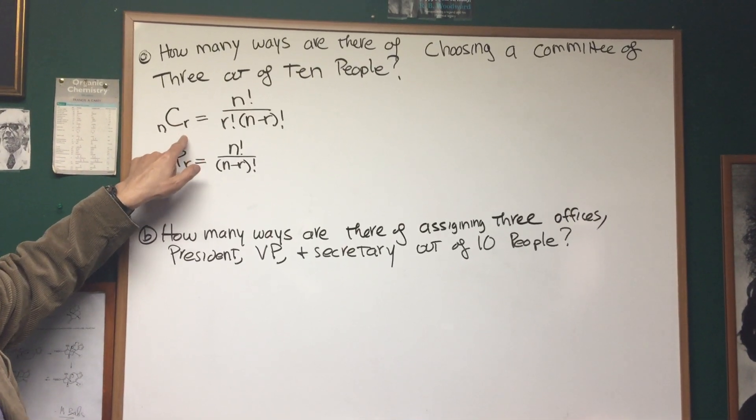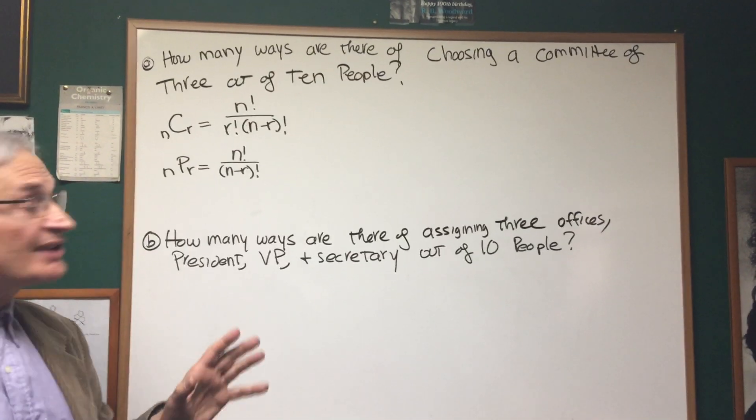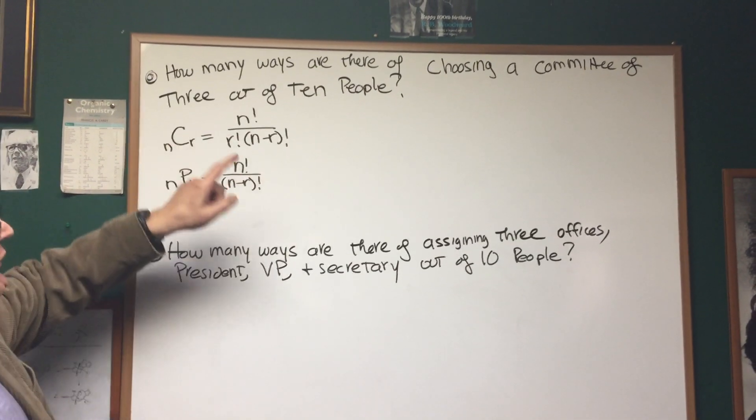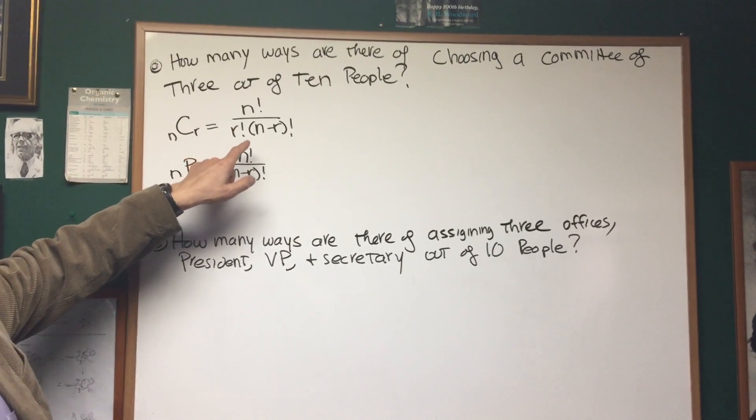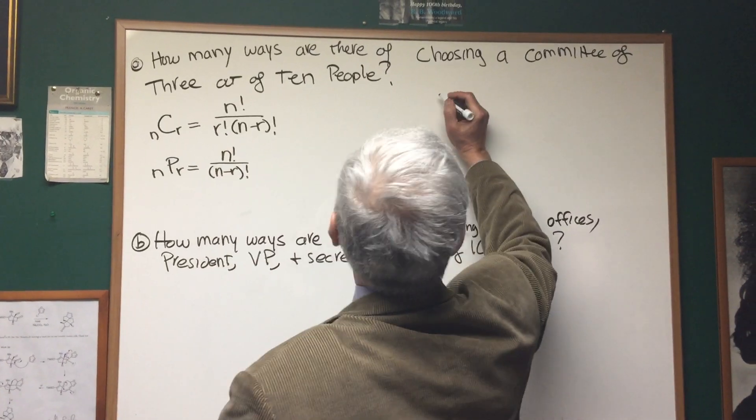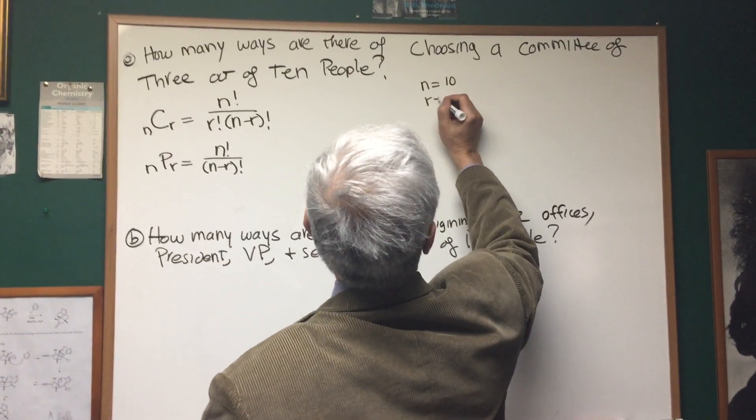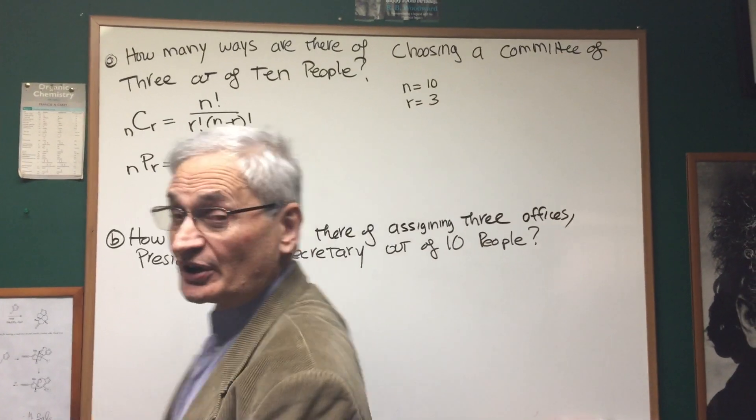We're going to use the combination formula which tells us how many ways there are to choose r things out of n things when order does not count. There's the formula: n factorial divided by r factorial times n minus r factorial. So in this problem the total number of things is ten and the number of things we're choosing from that is three.